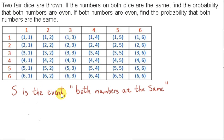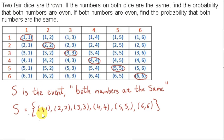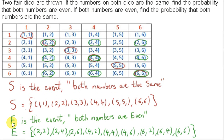Let S be the event that both numbers are the same. Here are the elements of set S. We can see that there are six elements in this set. Let E be the event that both numbers are even. We can see that there are nine elements in this event.